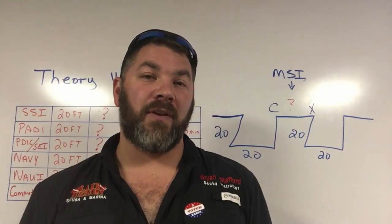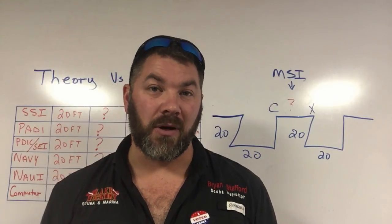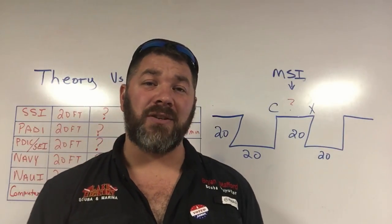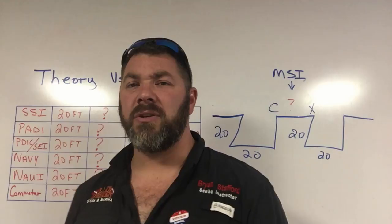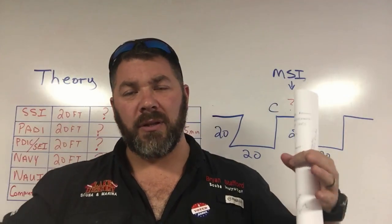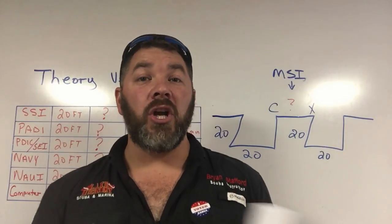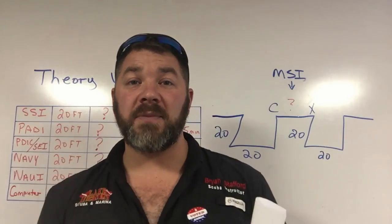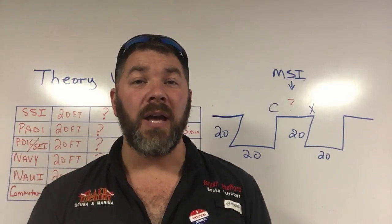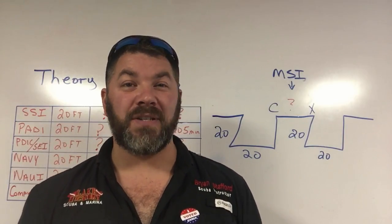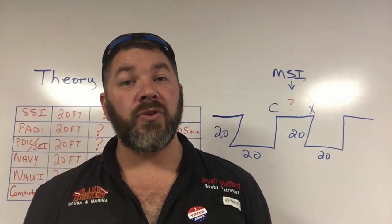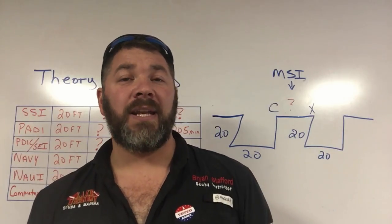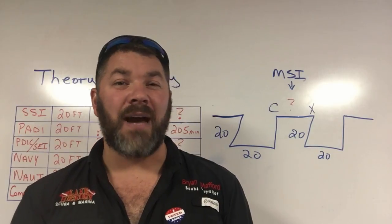We all have different types of tissues in our bodies. We have fast tissues that on-gas and off-gas nitrogen quicker, and we also have slow tissues. Looking at diver to diver, none of us are exactly the same. So we use the rule of averages when planning dives with dive tables and even dive computers.